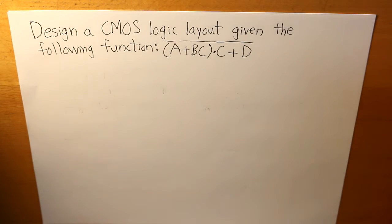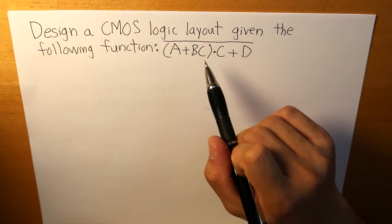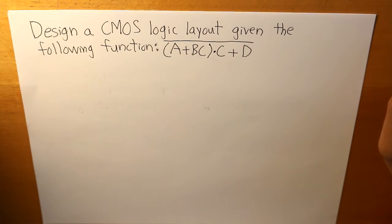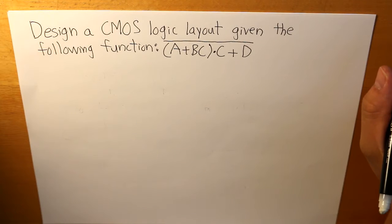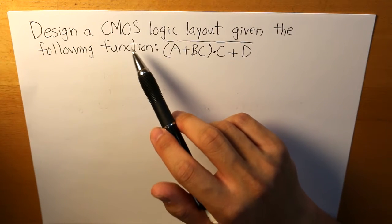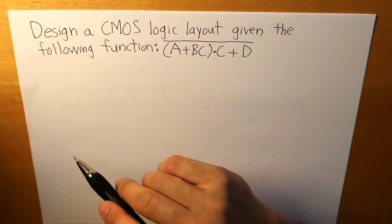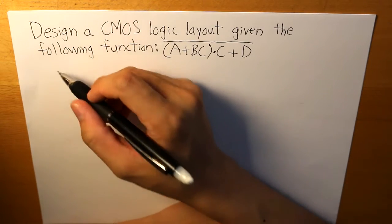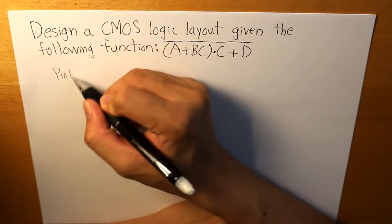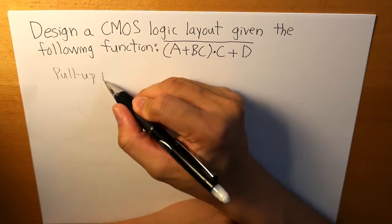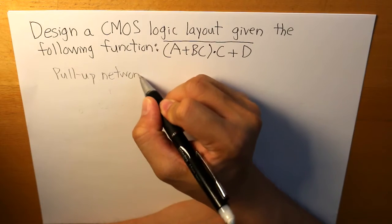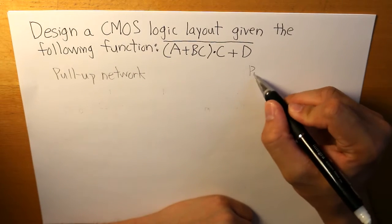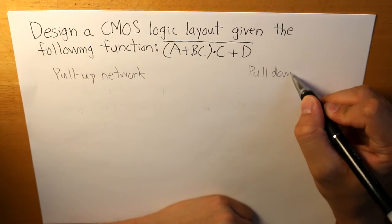So the question is, we have to design a CMOS logic layout, and what is it going to be? And first, what we have to do is we have to split CMOS in two parts, and these two parts would be labeled as networks. So the first one would be called the pullup network, and the second would be our pulldown network.